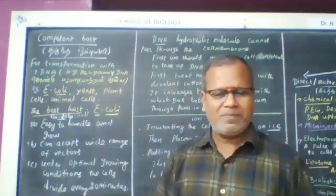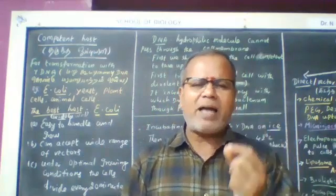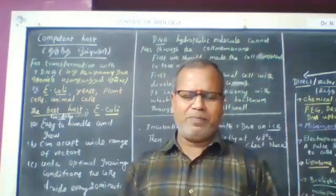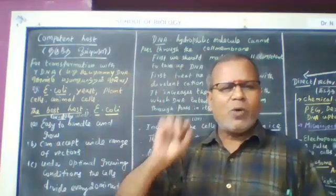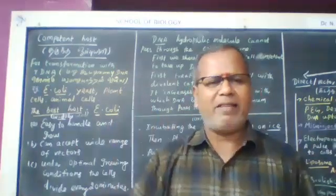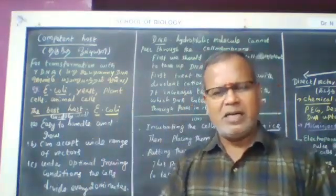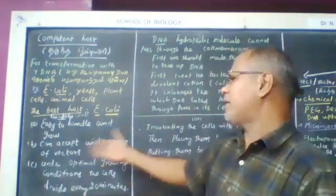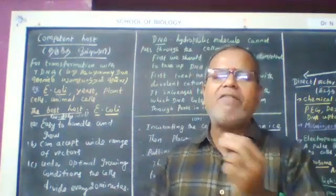In genetic engineering, the widely used host is the intestinal bacterium E. coli. Why? E. coli is easy to handle and grow. E. coli can accept a wide range of vectors. Under optimal growing conditions, the cells divide every 20 minutes.